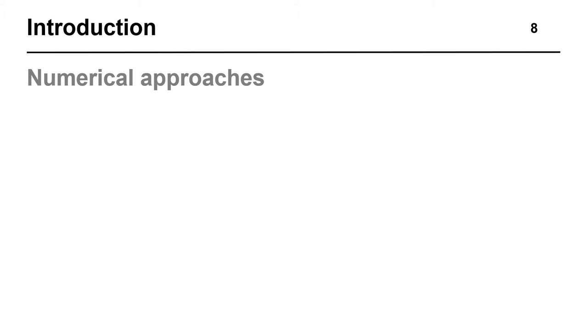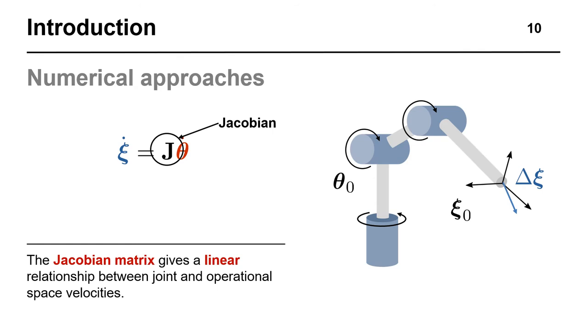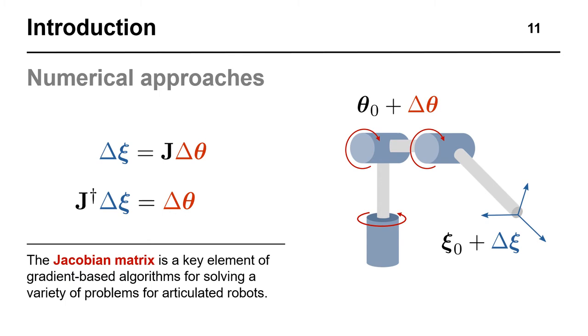Most algorithms for performing these tasks resort to numerical approaches. These approaches are commonly based on incrementally moving the end effector or some other link and iterating in order to follow a reference or until a desired goal is reached. These iterations are commonly performed by using the gradient of the forward kinematic mapping, which reveals a relationship between the operational space and joint velocities.